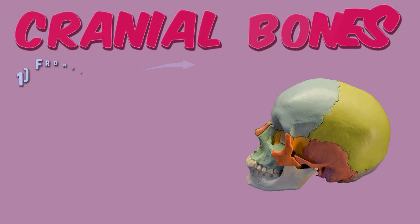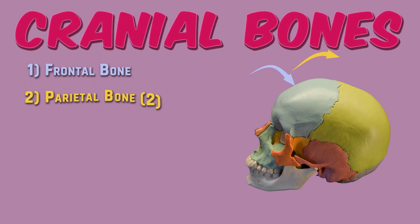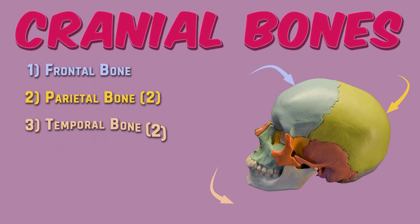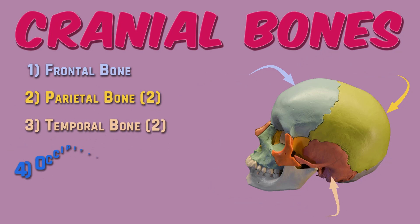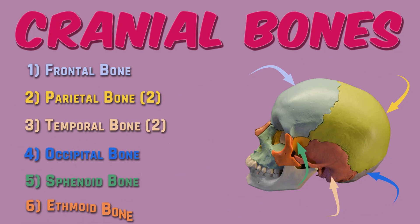The eight bones that form the cranial cavity are: the frontal bone, two parietal bones, two temporal bones, the occipital bone, the sphenoid bone, and the ethmoid bone.